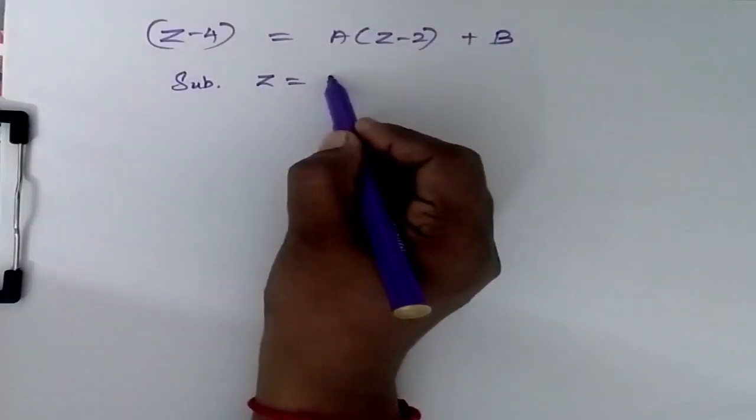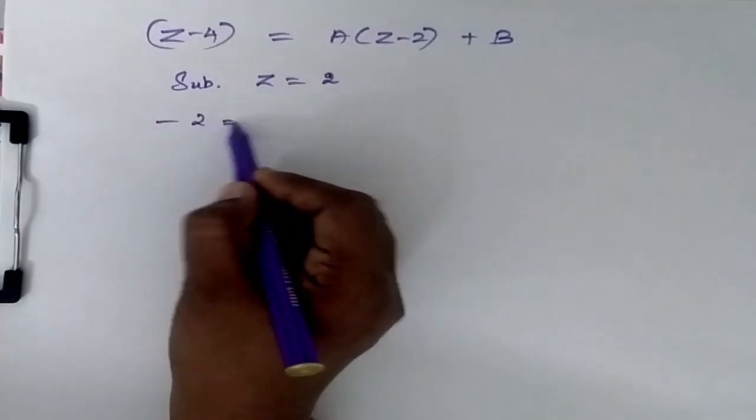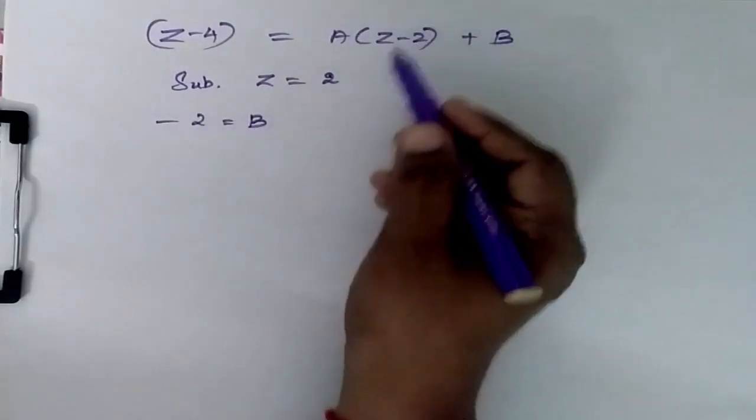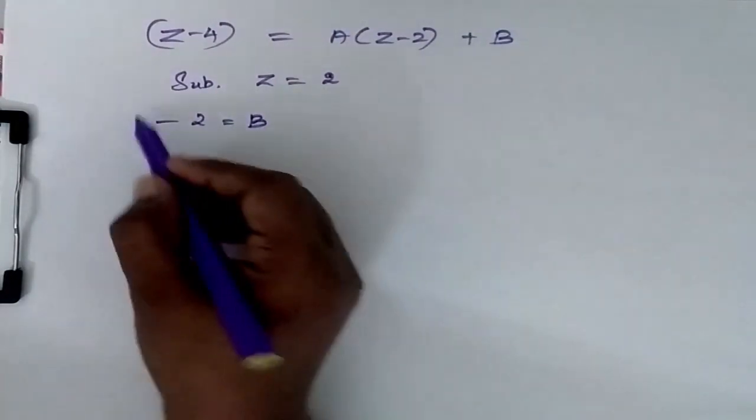Substitute Z is equal to 2. This will become 0. So B is equal to minus 2.